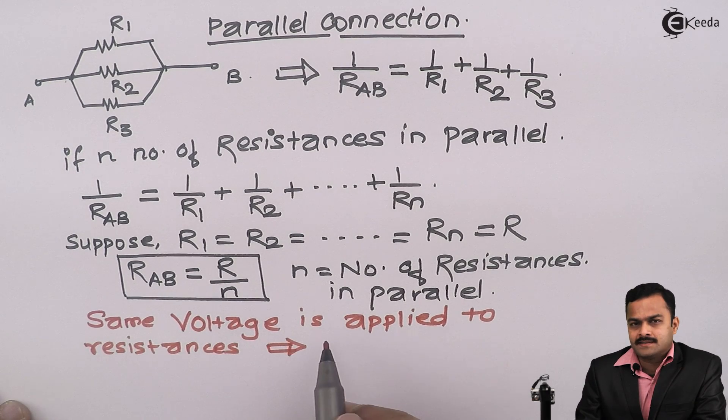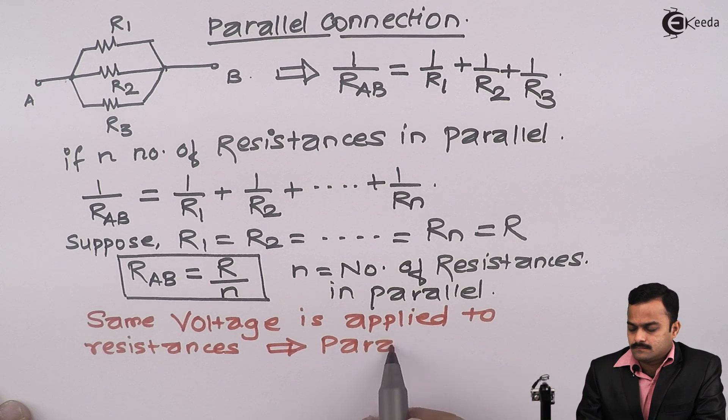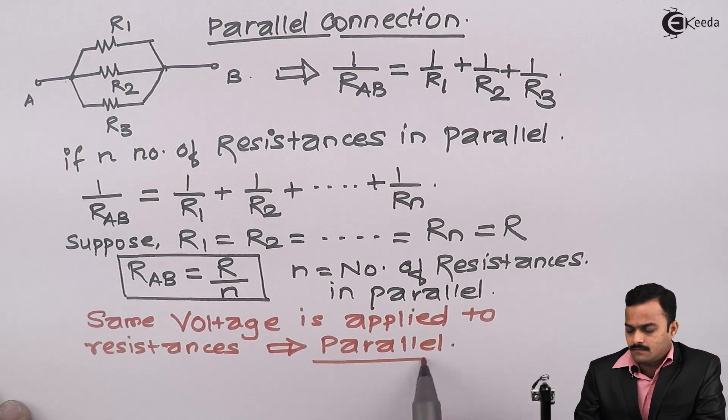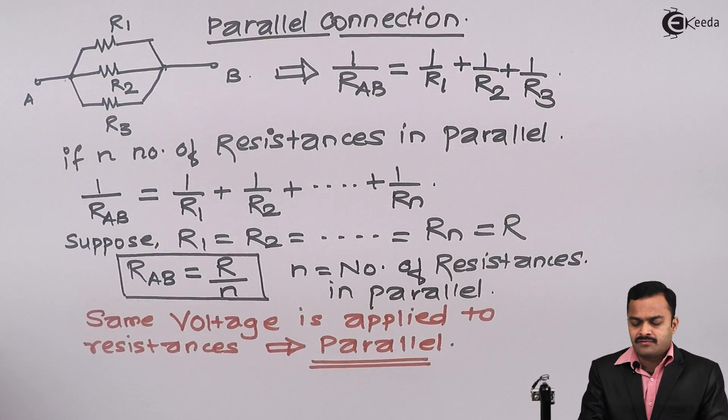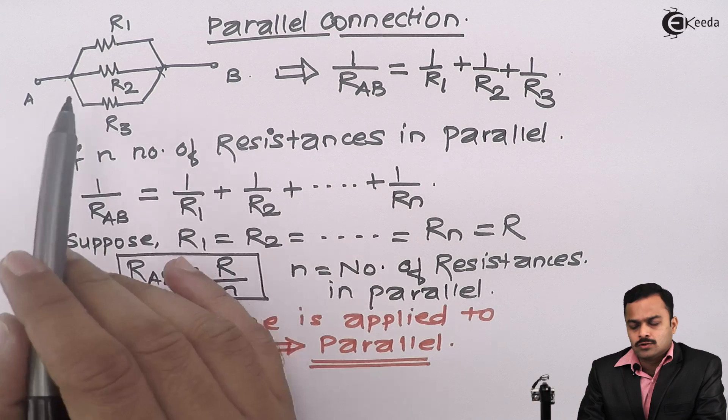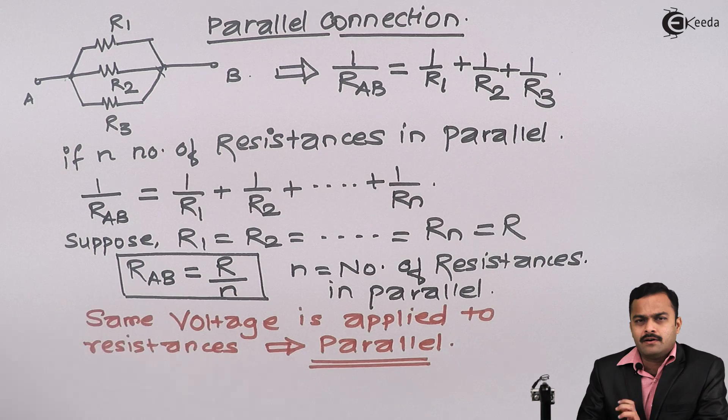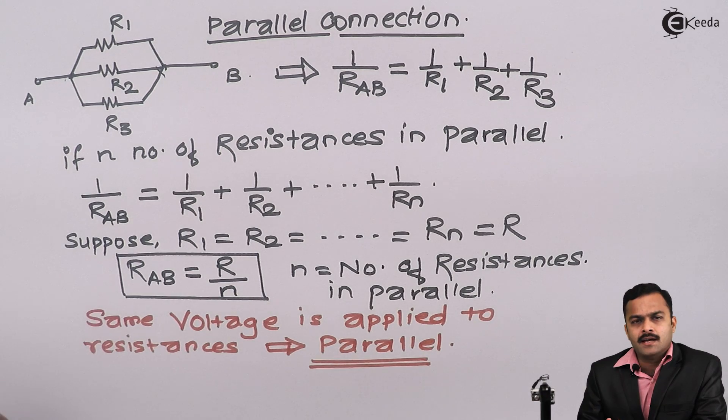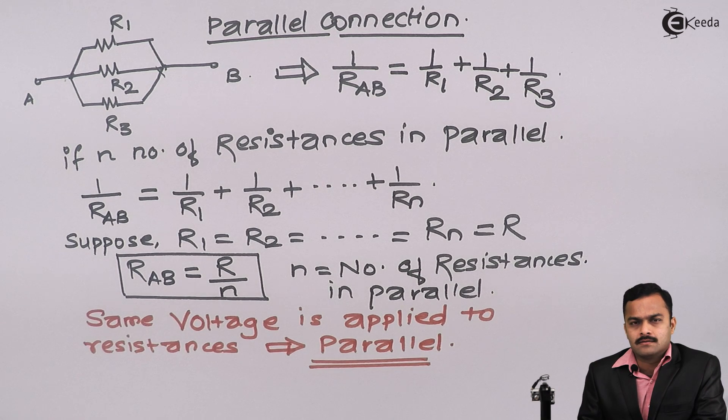That implies those resistances are in parallel. So here we have seen, as far as structure is concerned, if resistances are bounded by two points, then those resistances are in parallel. But at the same time, we have seen that whenever the same voltage is applied across them, we can also say the resistances are in parallel. So here we have seen the parallel combination of resistances.